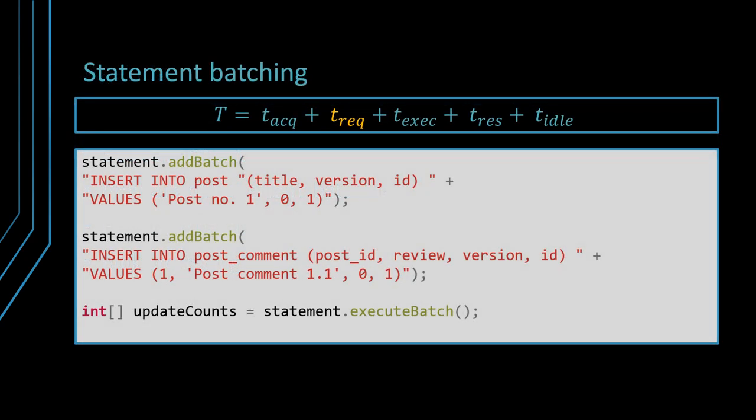JDBC 2.0 introduced batch updates so that multiple insert, update, or delete statements can be grouped into a single database request. Sending multiple statements in a single request reduces the number of database round trips, therefore decreasing transaction response time.